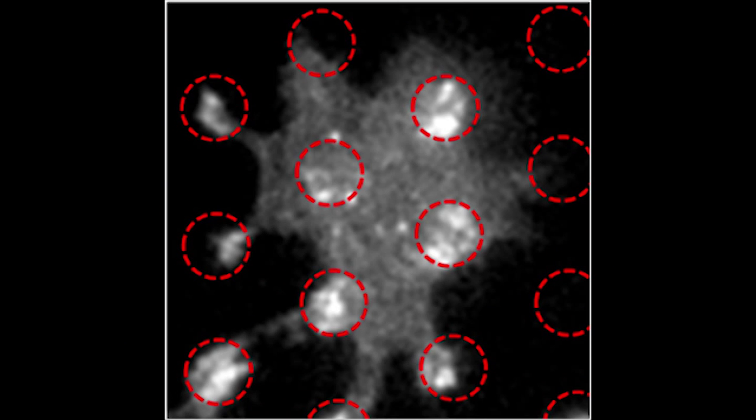When we zoom on a single growth cone, we see the accumulation of N-cadherin GFP on the N-cadherin coded dots here in red.